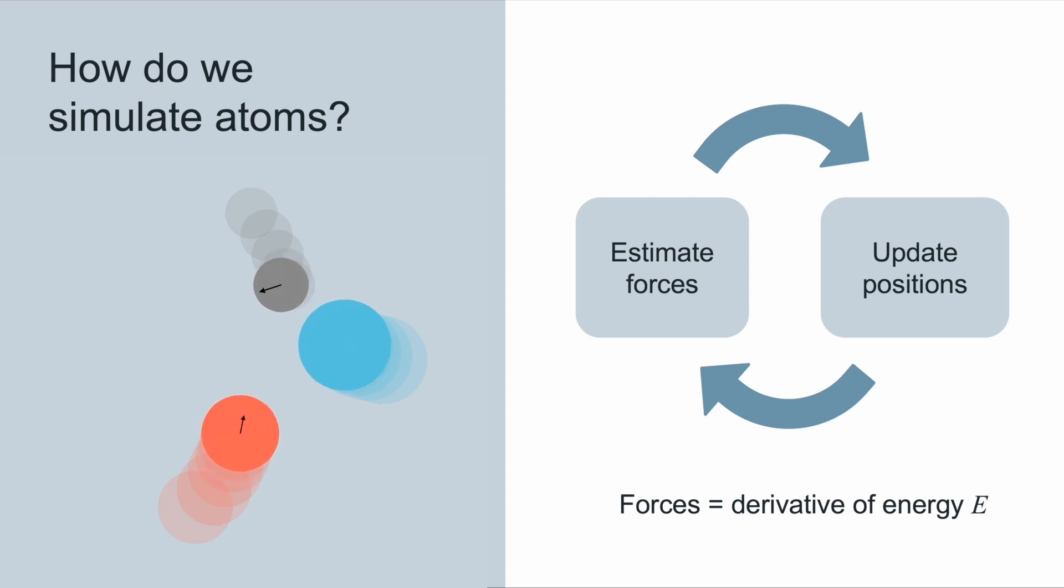So the trick is how do we compute the energy? One way we can compute the energy is to use something called density functional theory, or DFT. Now DFT takes this input, the 3D atom positions and their atomic numbers, and then does a bunch of calculations, and then produces the overall system energy and the per atom forces.